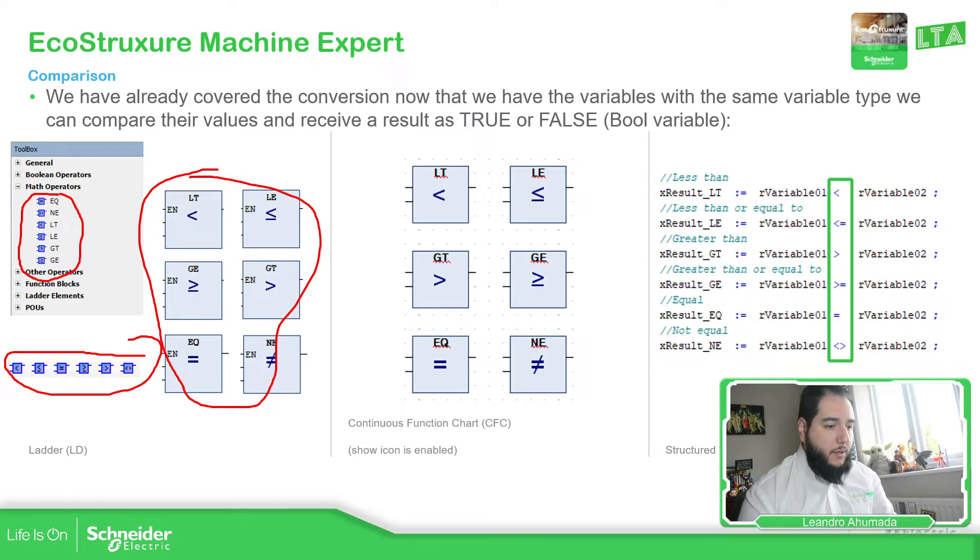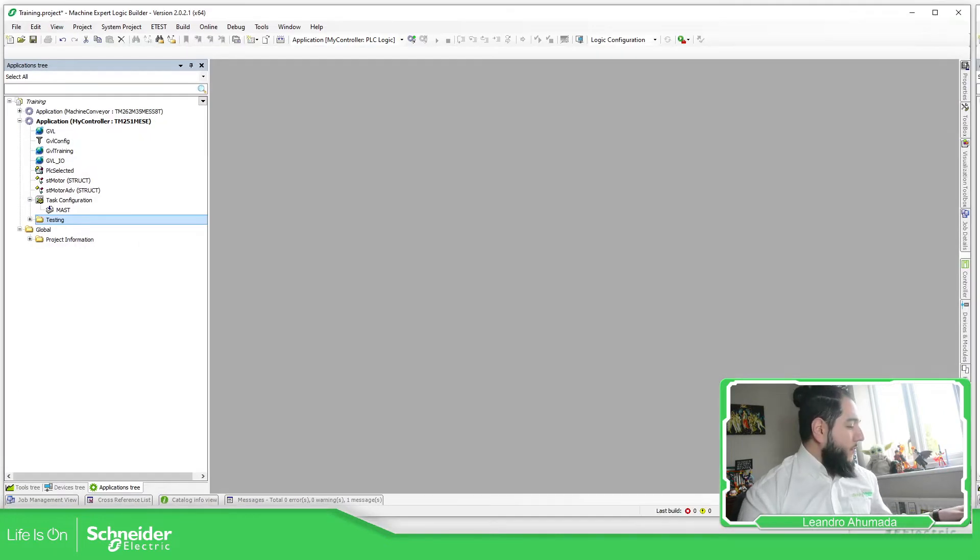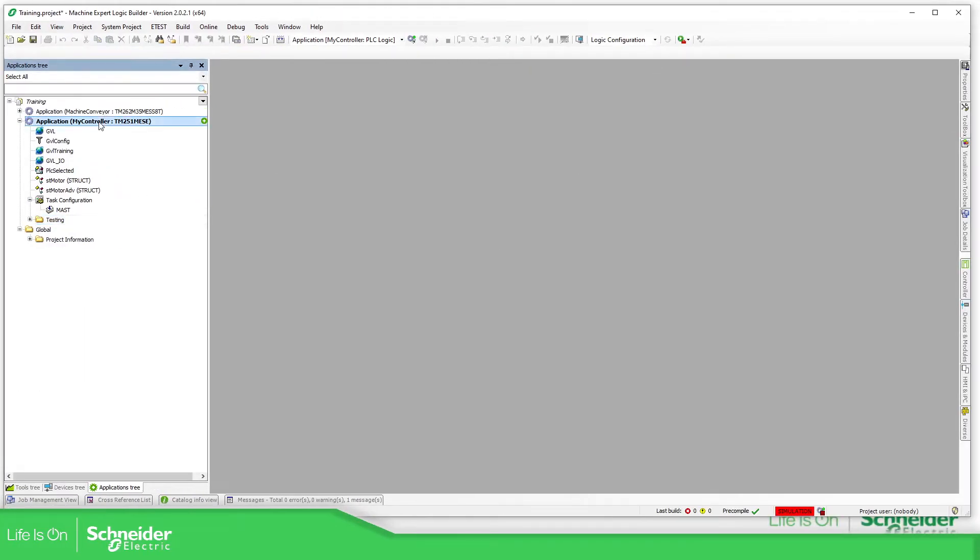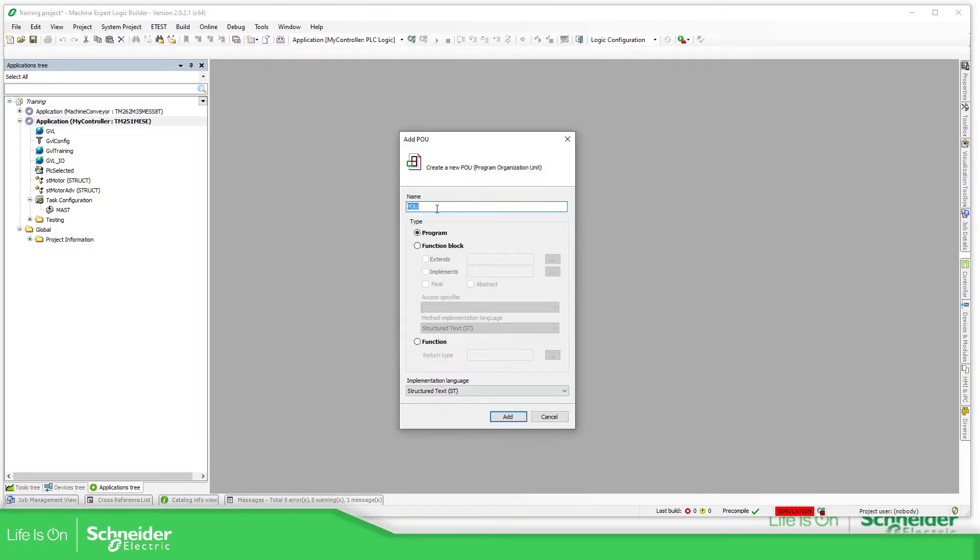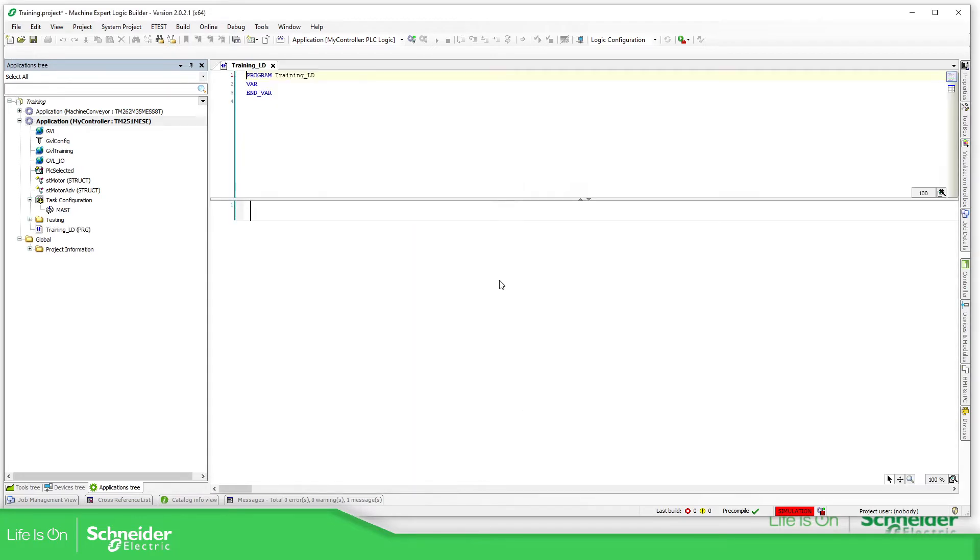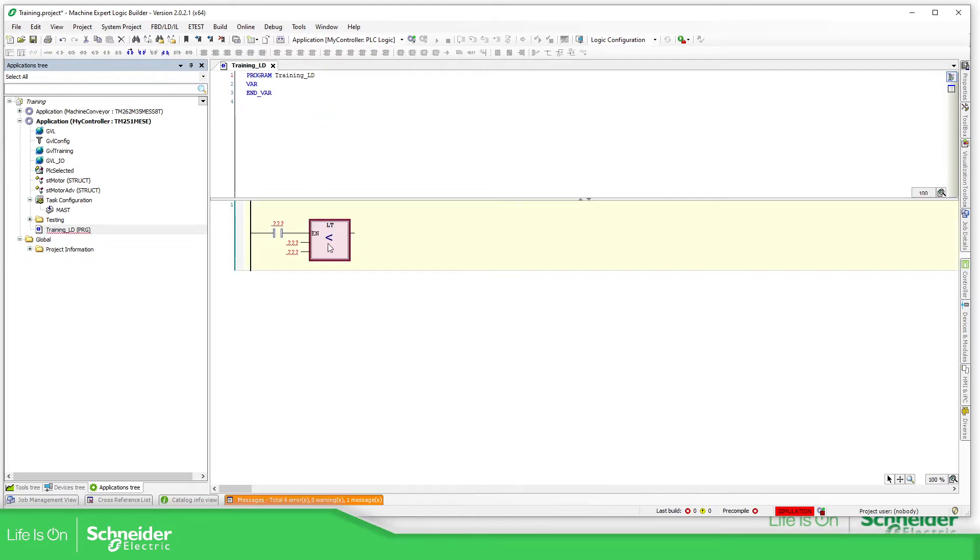So if we go to the software, just open the software here, depending on the POU that we have. So let me just add a POU here, training in this one ladder. We'll just say to select ladder. So when we select the rung, we can see in the top all the different elements. Now, our case for comparison are over here. So what this comparison does is to compare different variables.